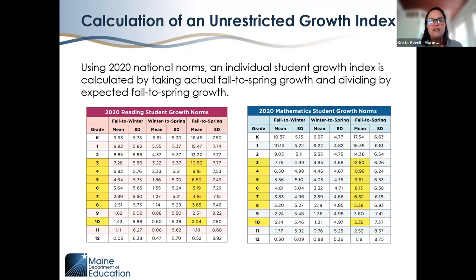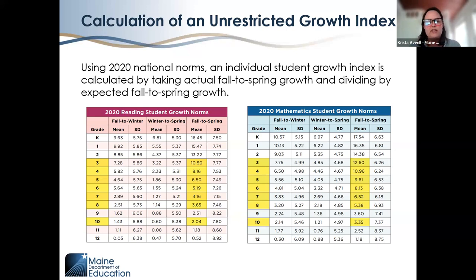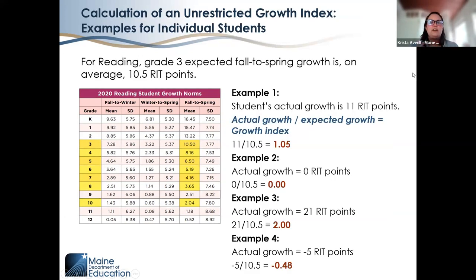Using those data points, we can calculate a growth index. We take a student's actual growth from fall to spring — their spring score minus their fall RIT score — and divide it by the expected growth from the norms tables. The mean fall-to-spring growth differs by content area and grade level. With vertically scaled assessments like MAP Growth, we expect more growth at younger grade levels, so we need to account for that when calculating growth.